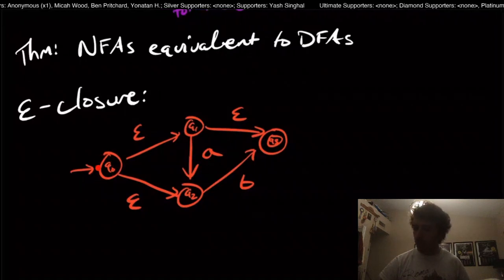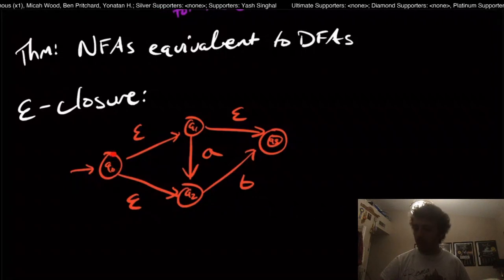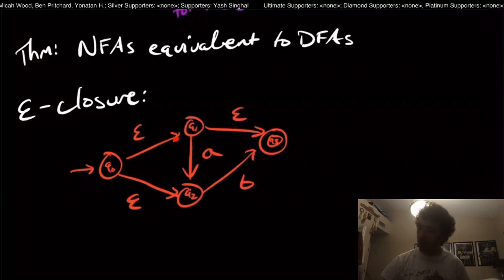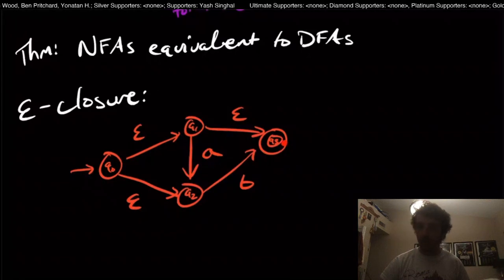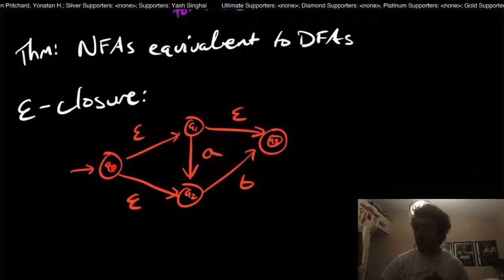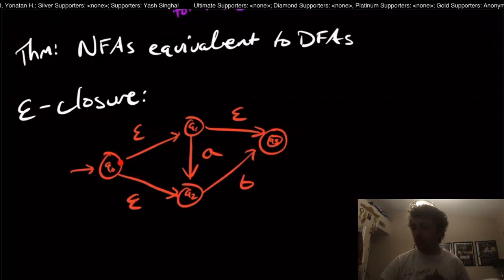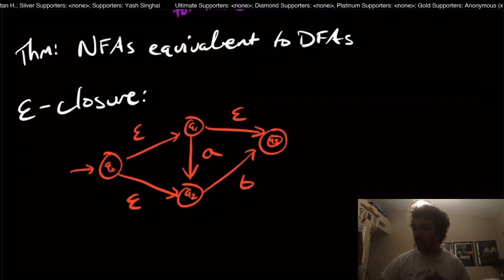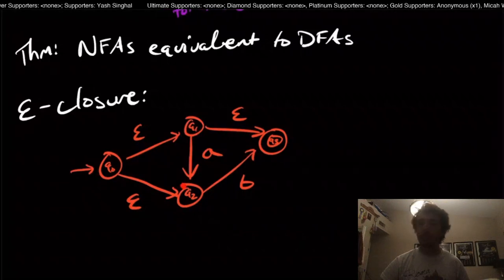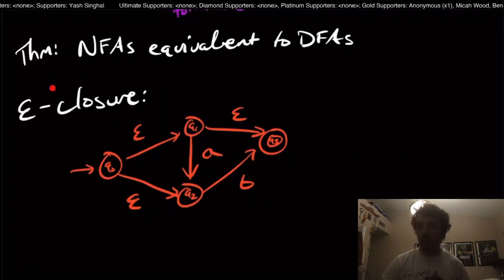Well, suppose that we're in the start state of the NFA here. Without reading any characters, where else can we go from this start state? Well, we can go over to Q1 if we want to and stop there, or we can go to Q1 and then to Q3 if we want to, because those just involve two epsilon transitions here. Or we can go from Q0 to Q2 if we wanted to. But the point is that from this Q0 state, we can go to any of these other states purely based on the fact that we can take these epsilon transitions without reading anything.